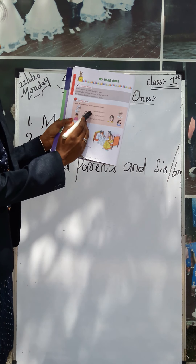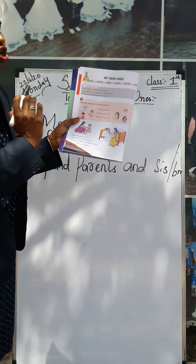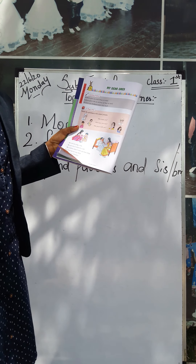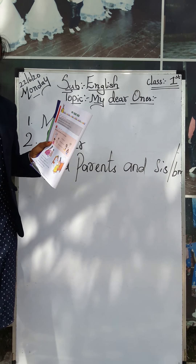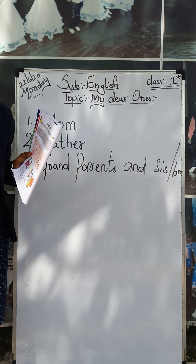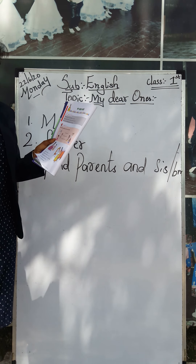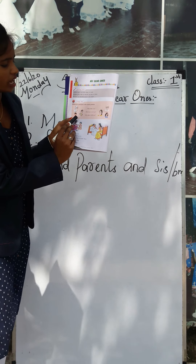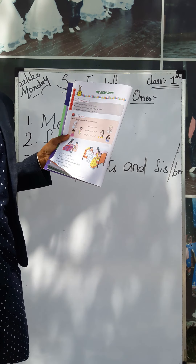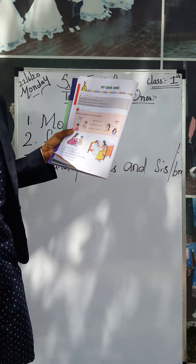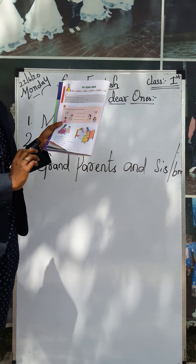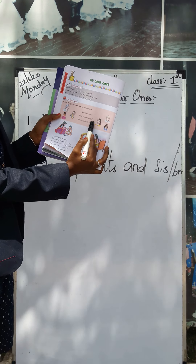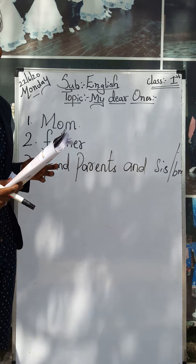You have to take the pencil and draw a line. And the third one — who plays with you? See children, at your home who plays with you? Brother or sister. If you have a brother, take the pencil and put the line, or sister is also given here. You have to take the pencil and draw the line.